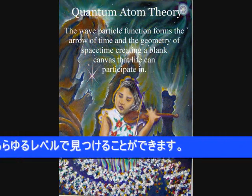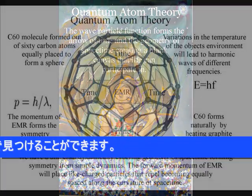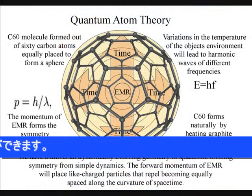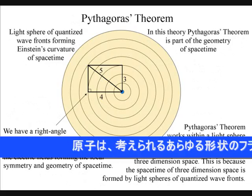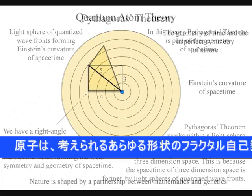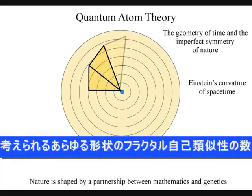The atoms will distort the geometry of space-time, creating mathematical patterns of fractional self-similarities of every conceivable shape.